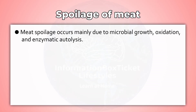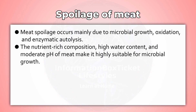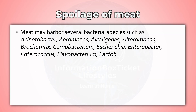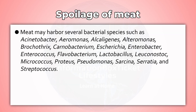Spoilage of Meat. Meat spoilage occurs mainly due to microbial growth, oxidation, and enzymatic autolysis. The nutrient-rich composition, high water content, and moderate pH of meat make it highly suitable for microbial growth. The normal flora of an animal's lymph nodes, including Staphylococcus, Streptococcus, Clostridium, and Salmonella, can contaminate meat.